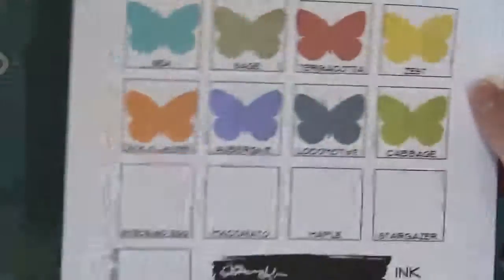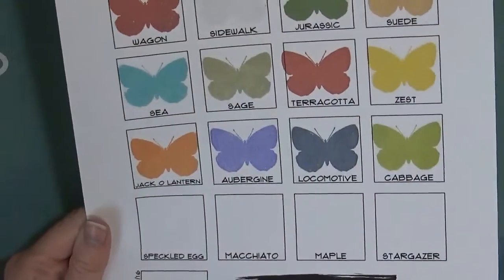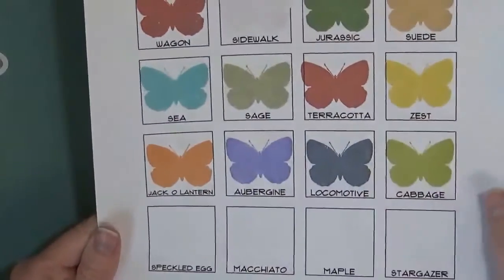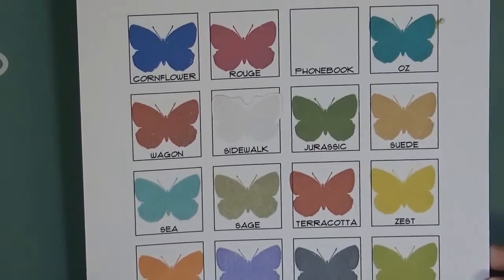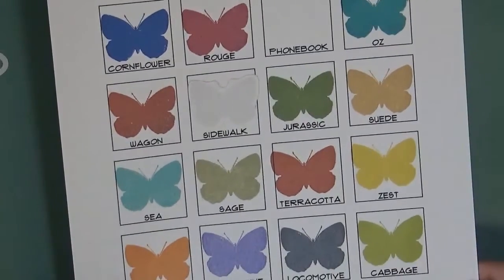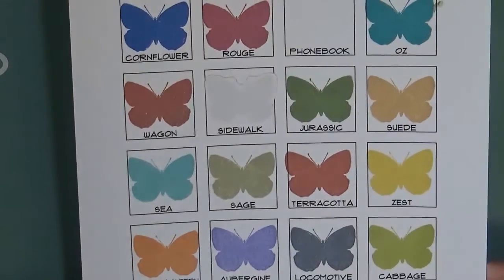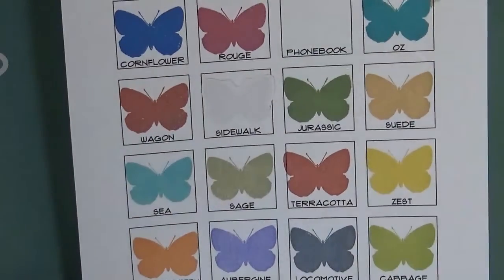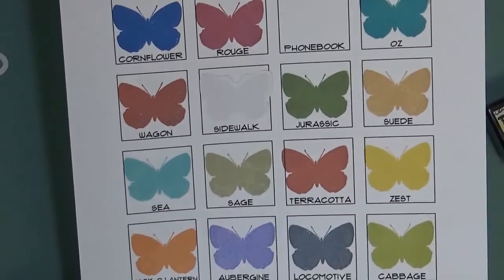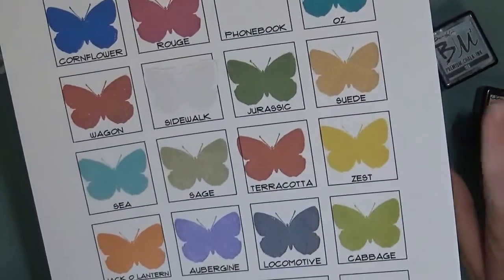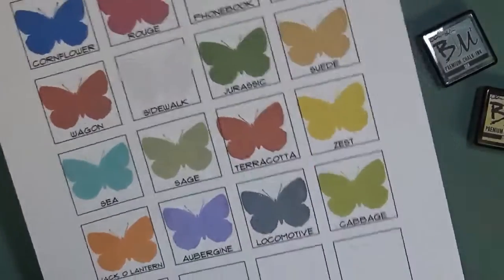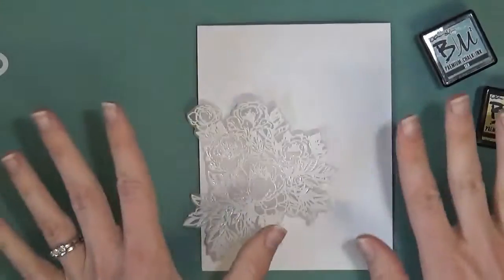And I have this little swatch chart of all the Brutus Monroe inks that I have. So I can kind of look through here and see which colors I like, which ones go together, and which ones I want to put on the card. So just looking at this I think I like the Zest and the Sea. I think those two would go together really well. So I'm going to put this aside and then get started blending on my background.